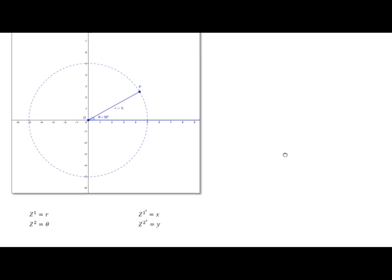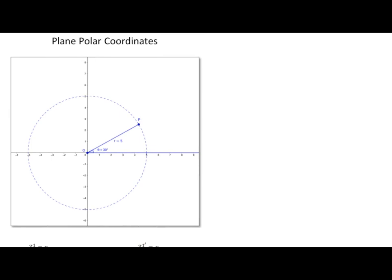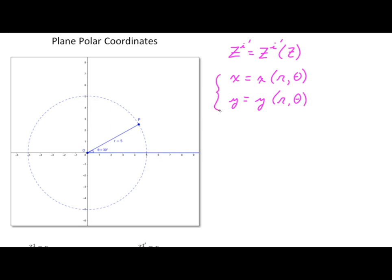We'll start with the prime system. We have the equation that the z-prime coordinates are going to be some function of the z coordinates. This is a free index, and since we're working in a two-dimensional system, this is really two equations in one. Specifically, we're looking for x as some function of r and theta, and likewise y as a function of r and theta. The free index is expanded to values of one and two because it's two-dimensional.